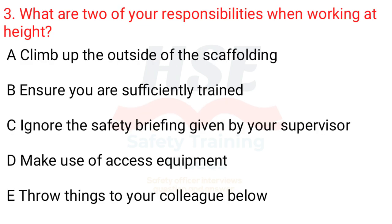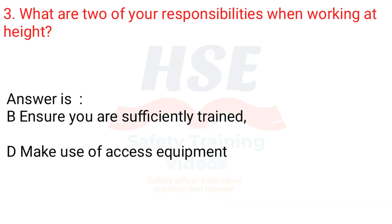Question 3: What are two of your responsibilities when working at height? A. Climb up the outside of scaffolding. B. Ensure you are sufficiently trained. C. Ignore the safety briefing given by your supervisor. D. Make use of access equipment. E. Throw things to your colleague below. Answer is B. Ensure you are sufficiently trained. D. Make use of access equipment.